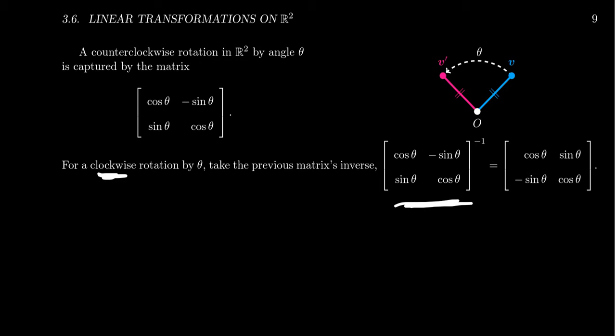So the opposite of rotating counterclockwise would be rotating clockwise. And you can actually show that the inverse of the matrix [cosine, negative sine; sine, cosine] is equal to [cosine, sine; negative sine, cosine]. I'll let you verify using some trig identities that this is in fact equal to the inverse matrix.